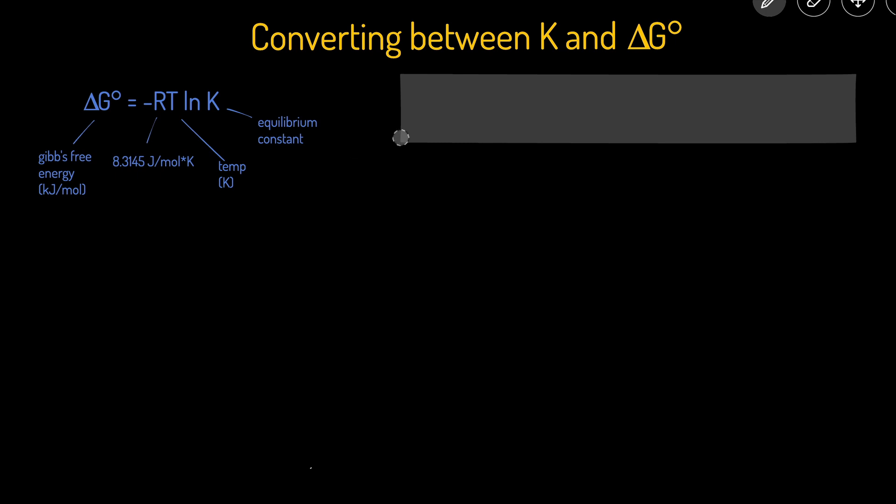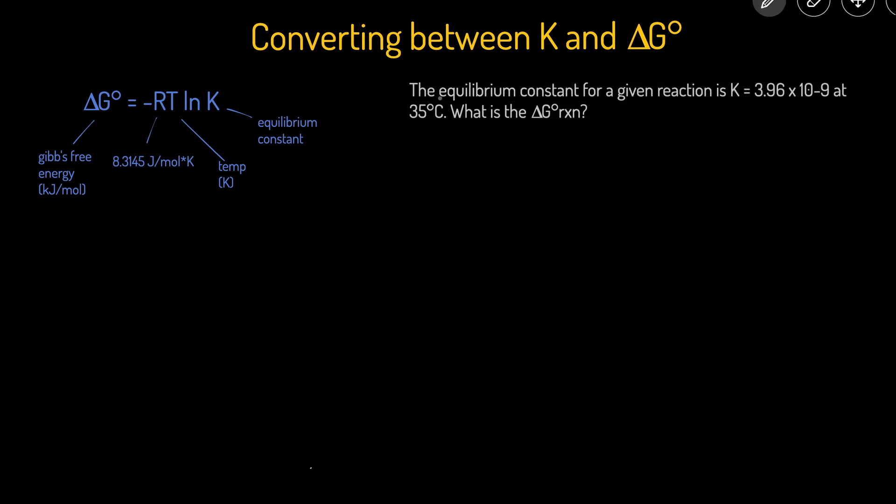Let's take a look at the first problem. The equilibrium constant for a given reaction K = 3.96 × 10⁻⁹ at 35°C. We have to solve for the ΔG° of this reaction.